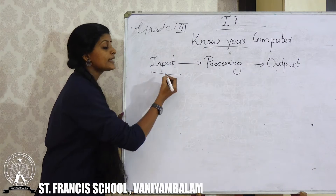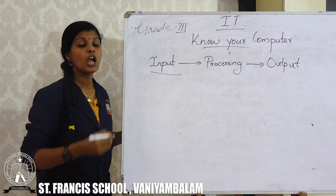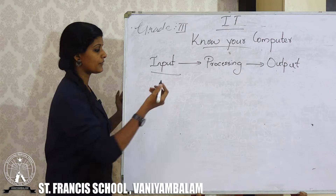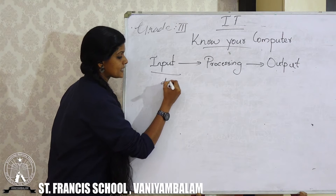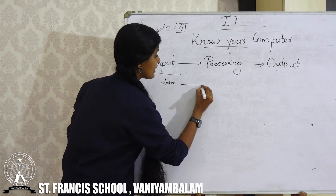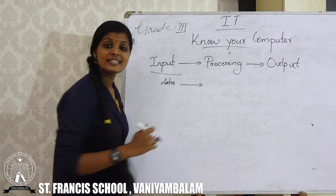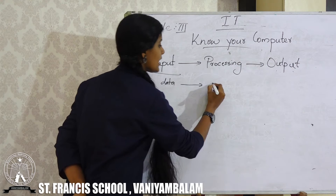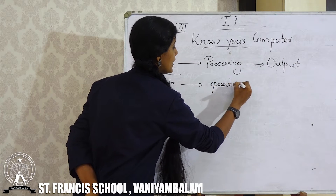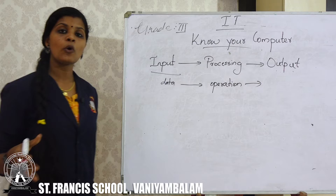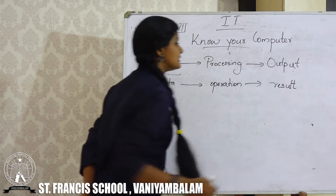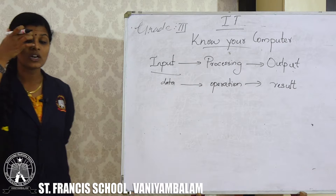Once again — here we are entering some information. For example, when we are doing maths or anything, we are giving some data. Where does this data go? This data will reach the processing device and here an operation will be performed. Then after that operation, we will get a result. This is the way a computer works.